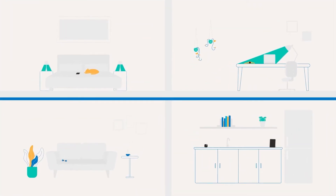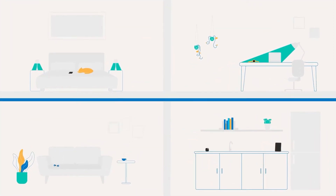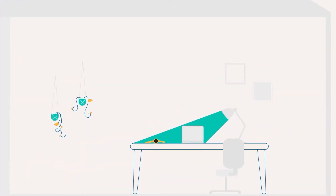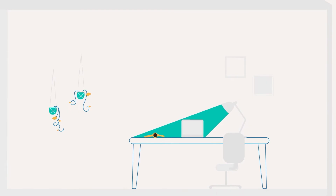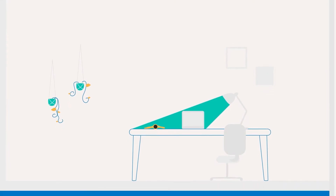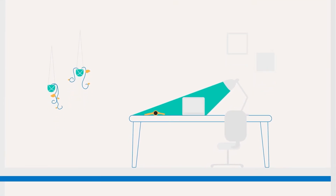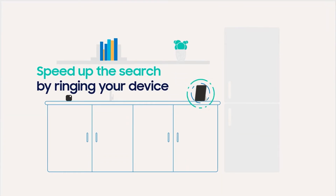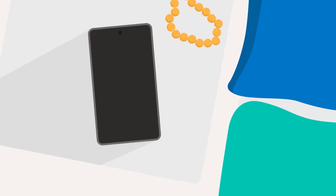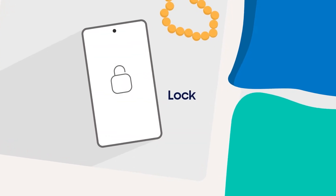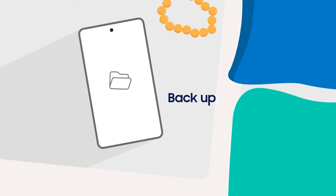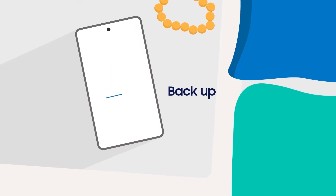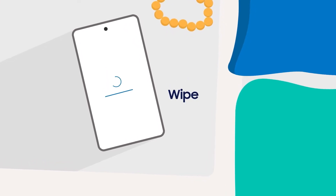Plus, you can also help your family find their devices by linking them with Find Members. As well as using the map, you can trigger sounds and use the camera on your phone to make the search easier. And if you can't reach your device, you can temporarily lock, back up, and even remotely wipe them.